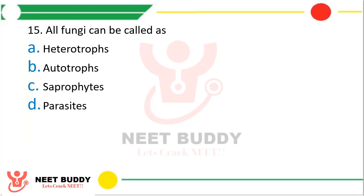Question 15: All fungi can be called as option A heterotrophs, option B autotrophs, option C saprophytes, or option D parasites. The correct answer is option A, heterotrophs. Some fungi are saprophytes, some are parasites, but all fungi cannot synthesize their own food — hence all fungi fall under the category of heterotrophs.